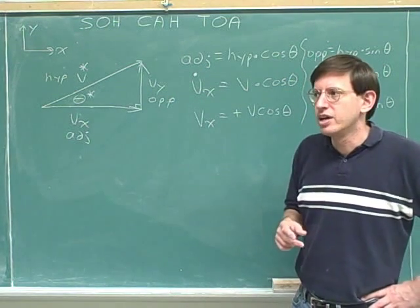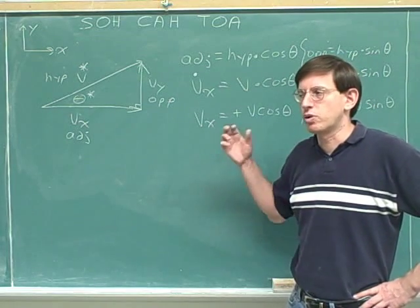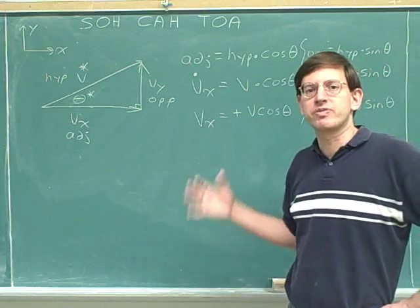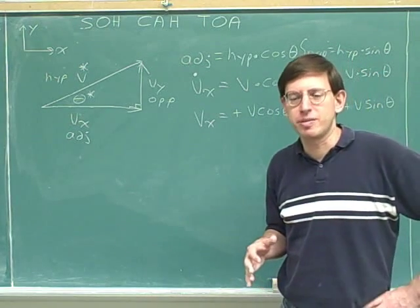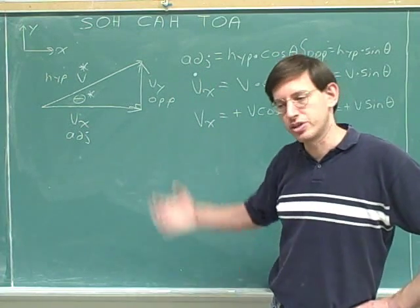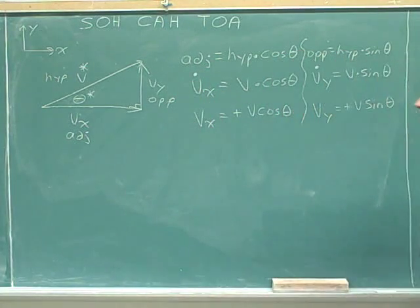Okay. So I think this is our first example of breaking a vector into components where we're only given variables and no numbers. But this is a very standard type of situation in physics. It's important that you be able to deal calmly with a situation where you're not given any numbers. So here's a good example. Take a look.